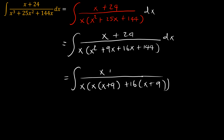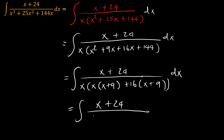So in the numerator we have x plus 24, and in the denominator we have x times x plus 16 times x plus 9. Our problem has gotten us here. Let's continue.